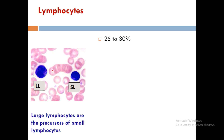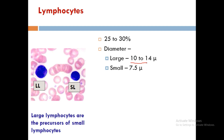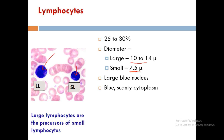Lymphocytes constitute 25 to 30 percentage of WBCs — the second highest count after neutrophils. Large lymphocytes have a diameter of 10 to 14 microns, while small lymphocytes have a diameter of 7.5 microns, close to that of RBCs. They have a large blue nucleus and blue scanty cytoplasm.